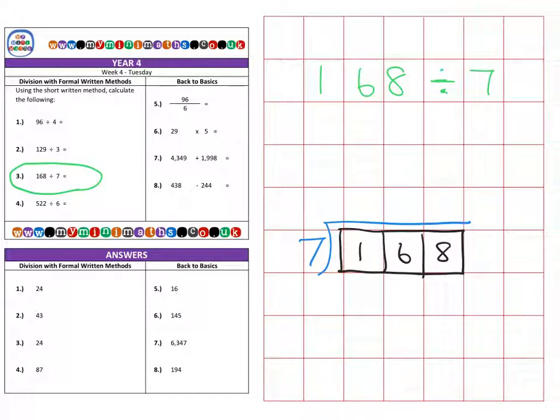So let's have a little look. Sevens into the one for the 100, but that won't go again. So we're going to carry that one over to make 16 in this box here. Sevens into 16. Well, we know two sevens are 14 and that leaves two from the 16 left over to carry over to the next column in the units.